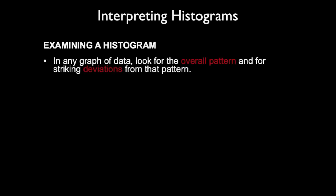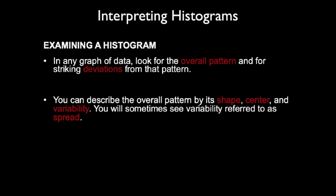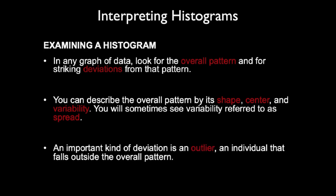In any graph of data, look for the overall pattern and for striking deviations from that pattern. You can describe the overall pattern by its shape, center, and variability — you will sometimes see variability referred to as spread. An important kind of deviation is an outlier, which is an individual that falls outside the overall pattern — it is an unusual point.